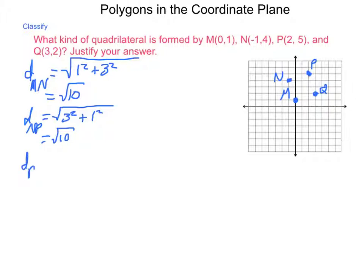The distance from P to Q. So, again, we have a square root of 10. So, again, we have a square root of 10.